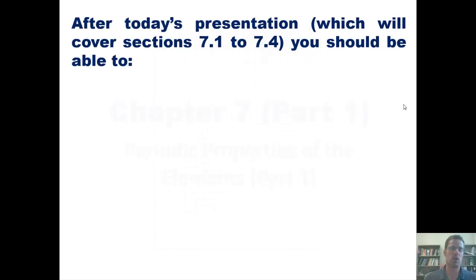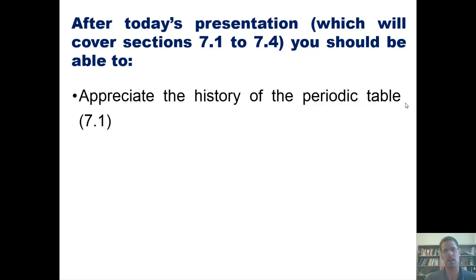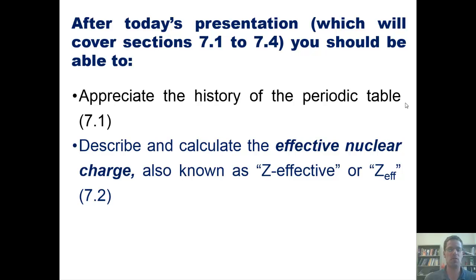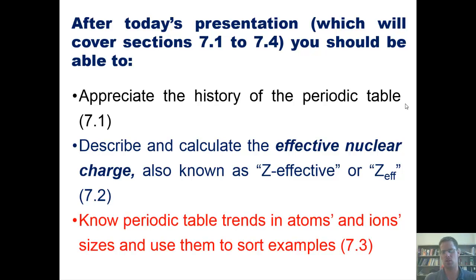After today's lecture, which will cover Sections 1 through 4 from Chapter 7 of our text, you guys should be able to do the following: appreciate the history of the periodic table, describe and calculate the effective nuclear charge (also known as Z-effective or Z-eff), and know the periodic table trends in atoms and ion sizes and use them to sort examples. Let's begin.